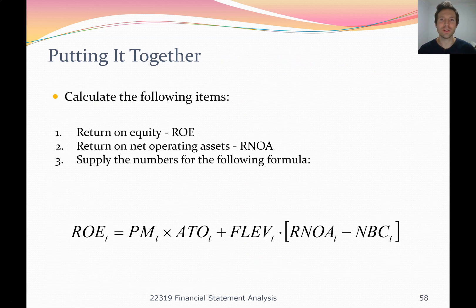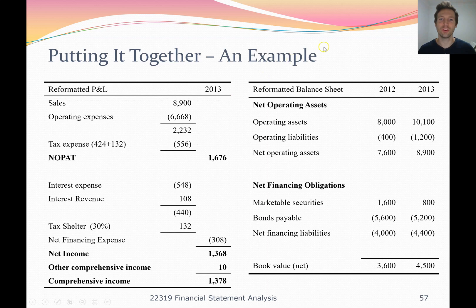We've got three questions for you to practice. The first one is to calculate your return on equity. To calculate your return on equity, you can first use the simple return on equity formula, which is ROE equals net profit divided by average owner's equity. Go back, look at your reformatted profit and loss statement, take your net profit or net income, and divide through by the average owner's equity.